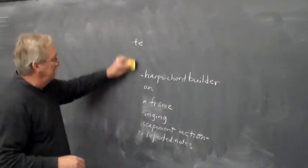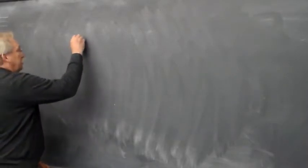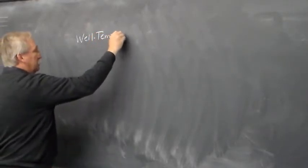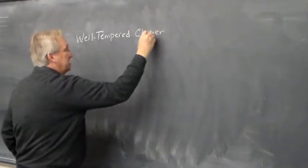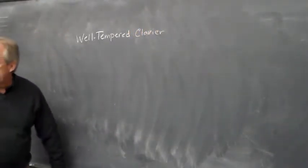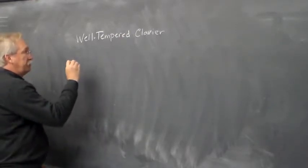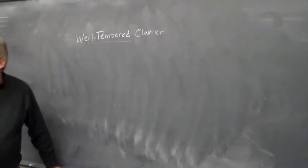So the most important collection of keyboard pieces in the Baroque period is the great monumental set that Johann Sebastian Bach composed that he entitled the Well-Tempered Clavier. So it uses the French version of clavier, rather than the K. And this term well-tempered refers to the tuning of the instrument.